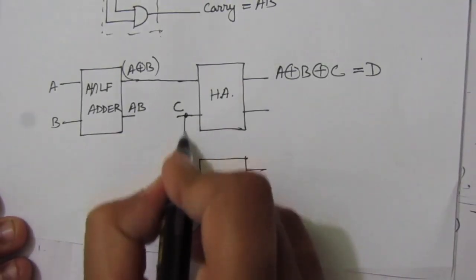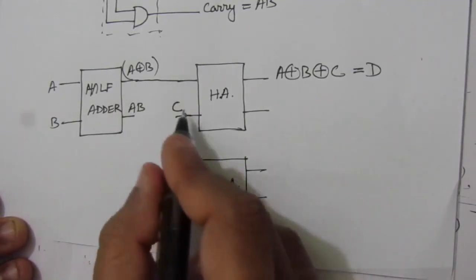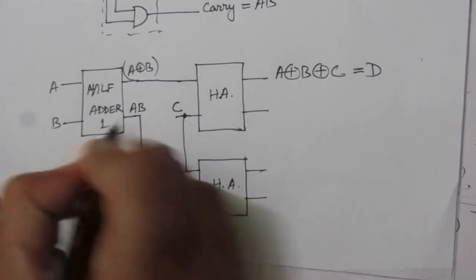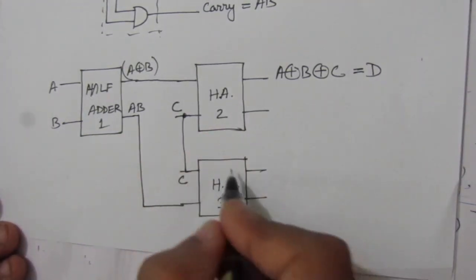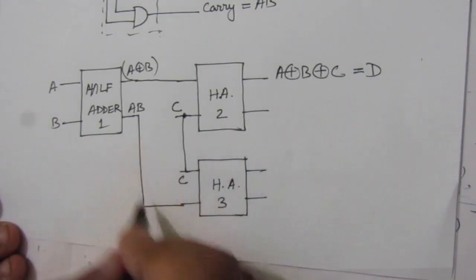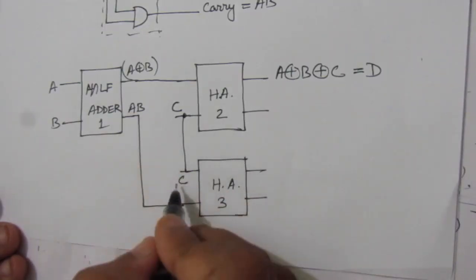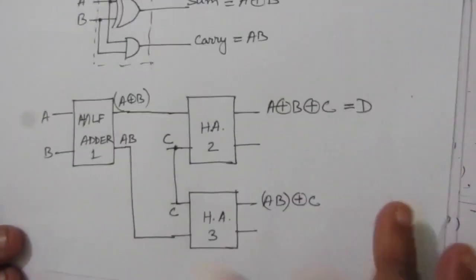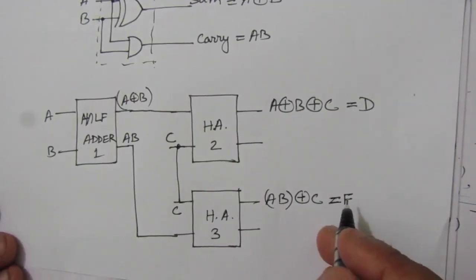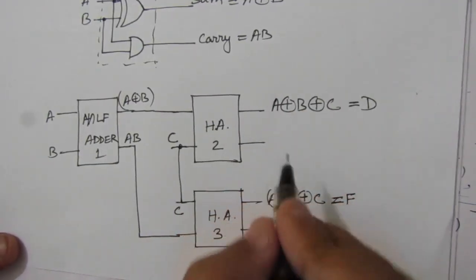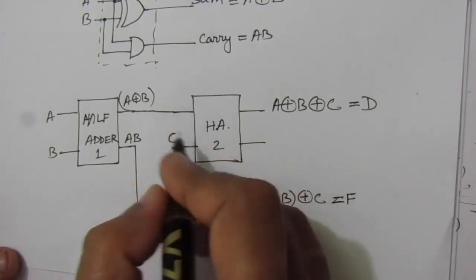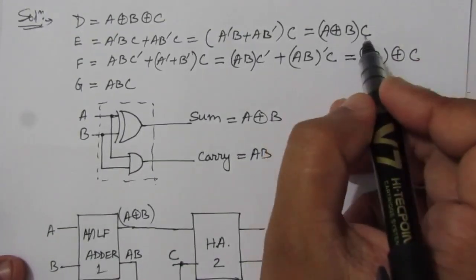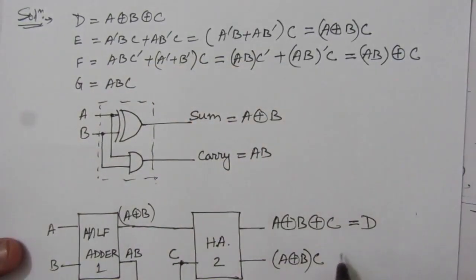Now the carry output A·B from the first half adder is given as input to the third half adder, and C is the other input. So for the third half adder: one input is C and the other input is A·B. At the sum output of the third half adder, we get A·B XOR C, which is nothing but function F. At the carry output of the second half adder, we get (A XOR B)·C, which is nothing but function E.